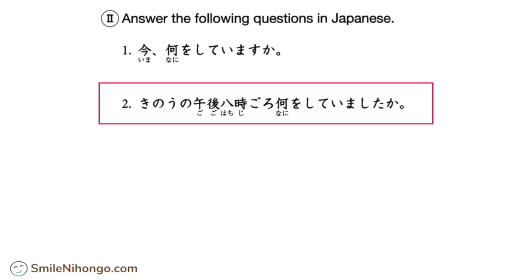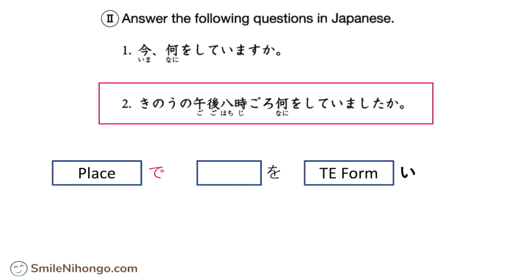昨日の午後8時頃、何をしていましたか? Do you understand the meaning of the question? 昨日の午後8時頃 means 'yesterday around 8pm,' right? And 何をしていましたか is asking you 'what were you doing?' — 'What were you doing around 8pm yesterday?' So you have to tell me what you were doing around 8pm last night. To answer this question, be sure that you provide the place of action in your response — place + で — and indicate what you were doing. Make sure that you end the response with ました at the end.